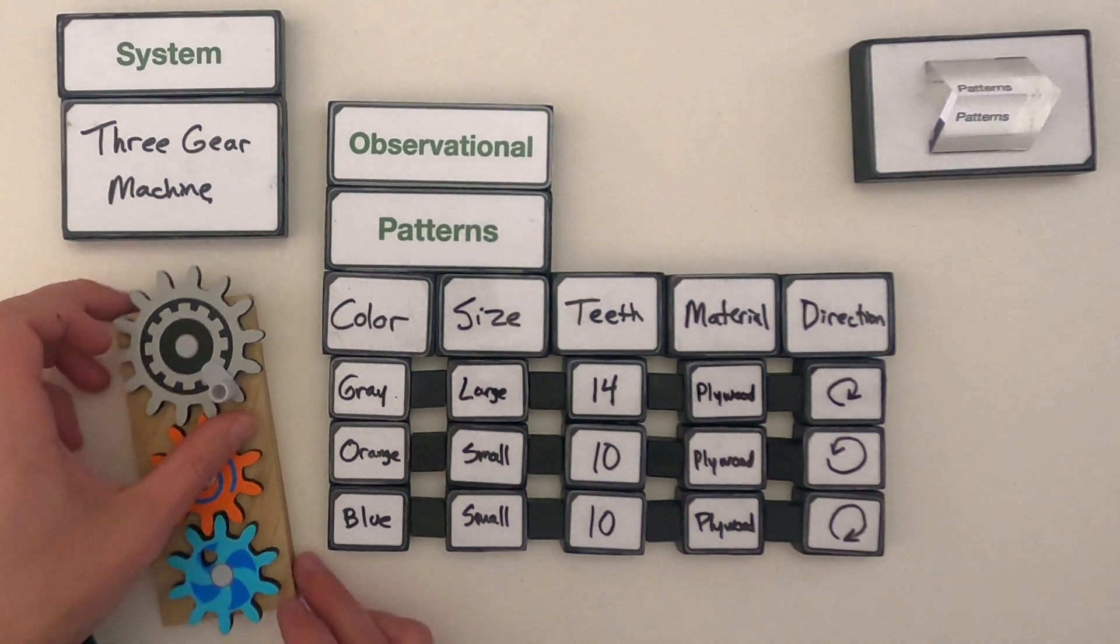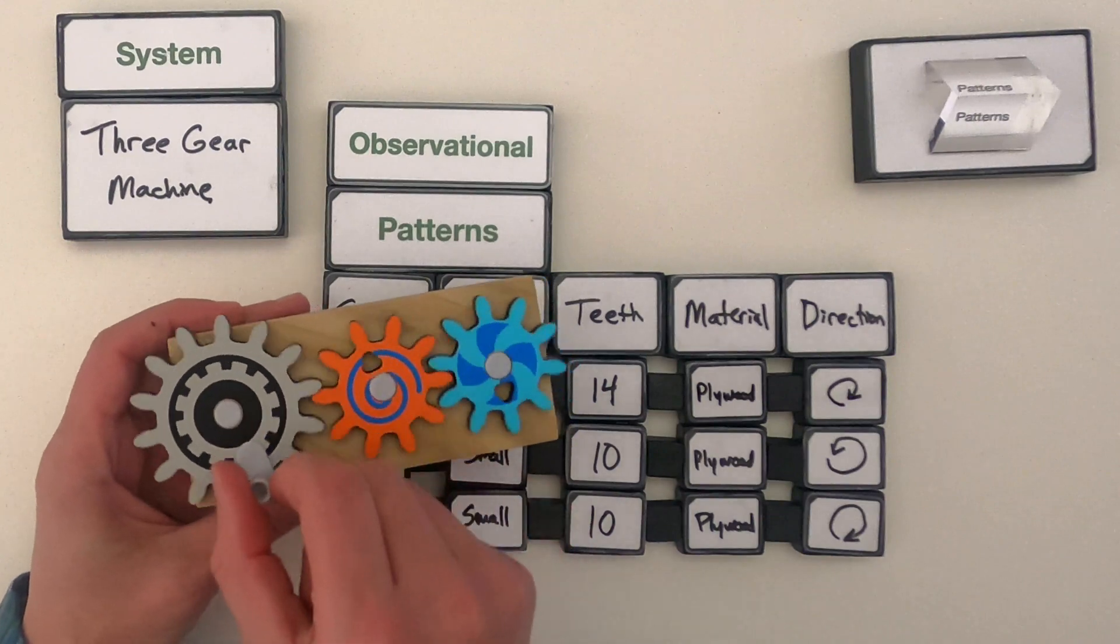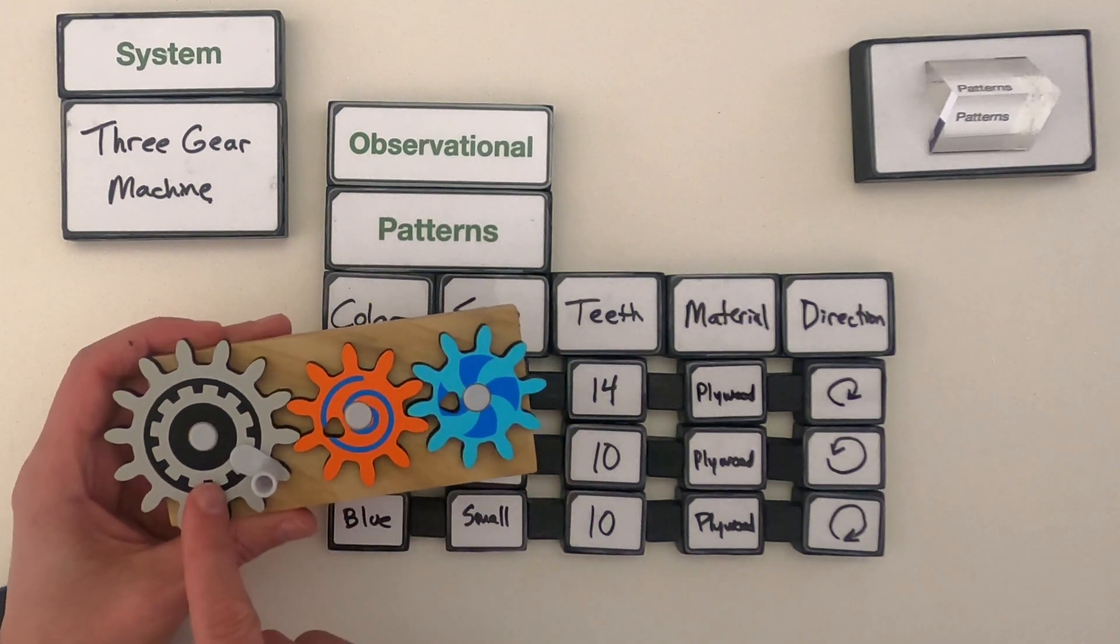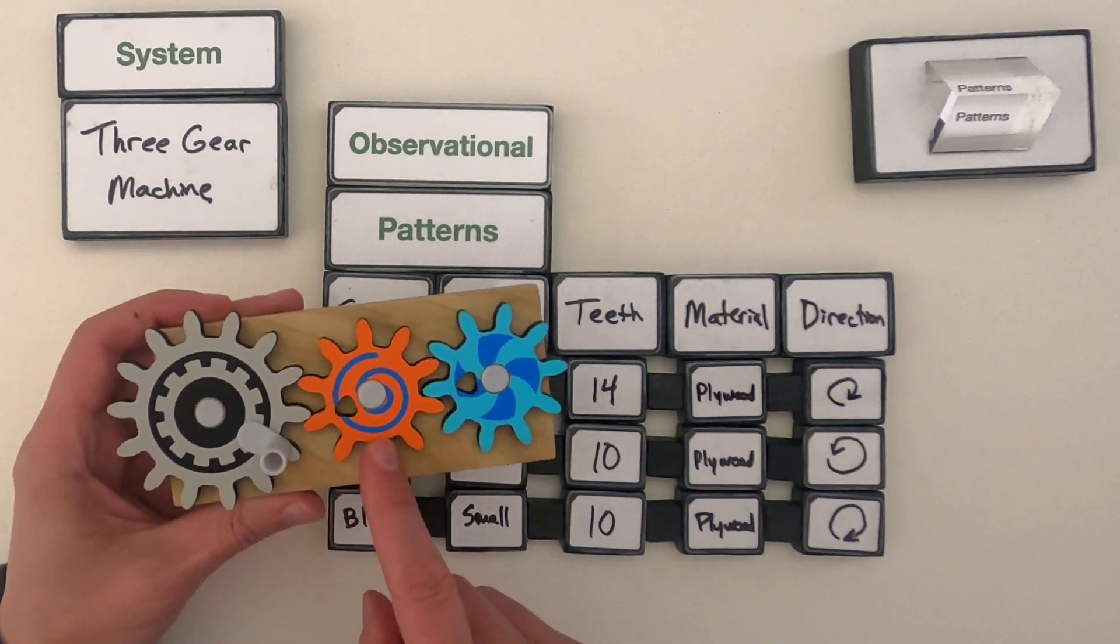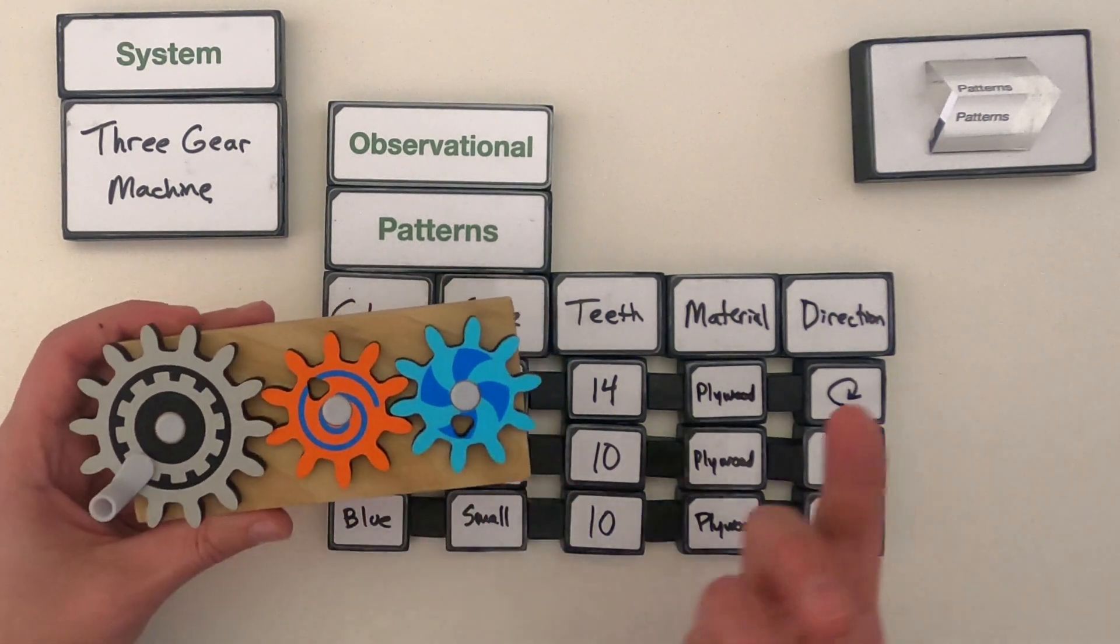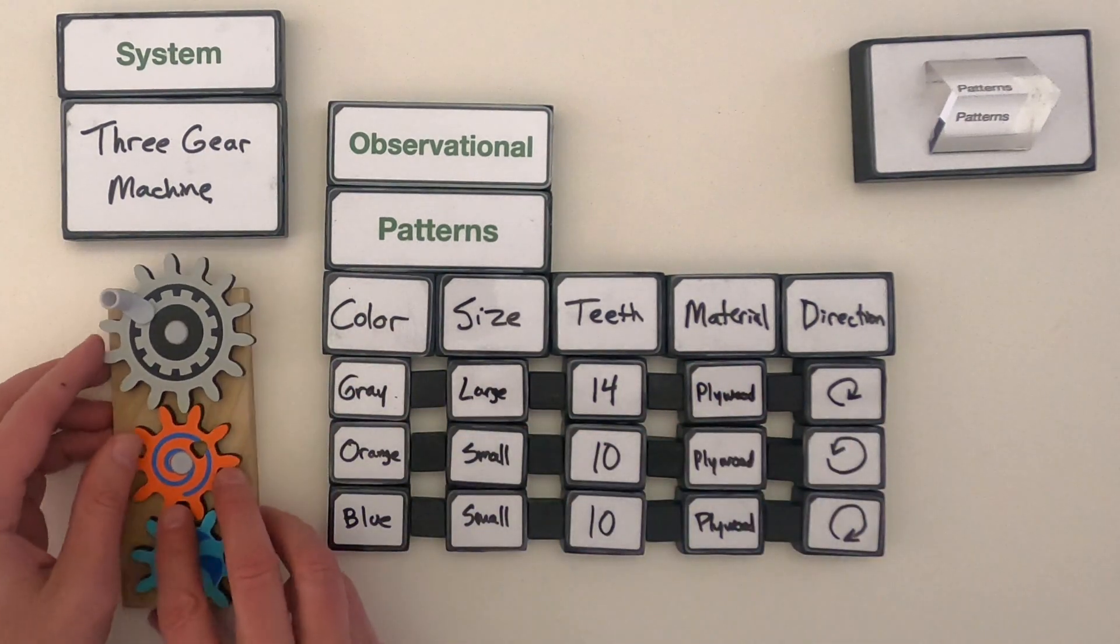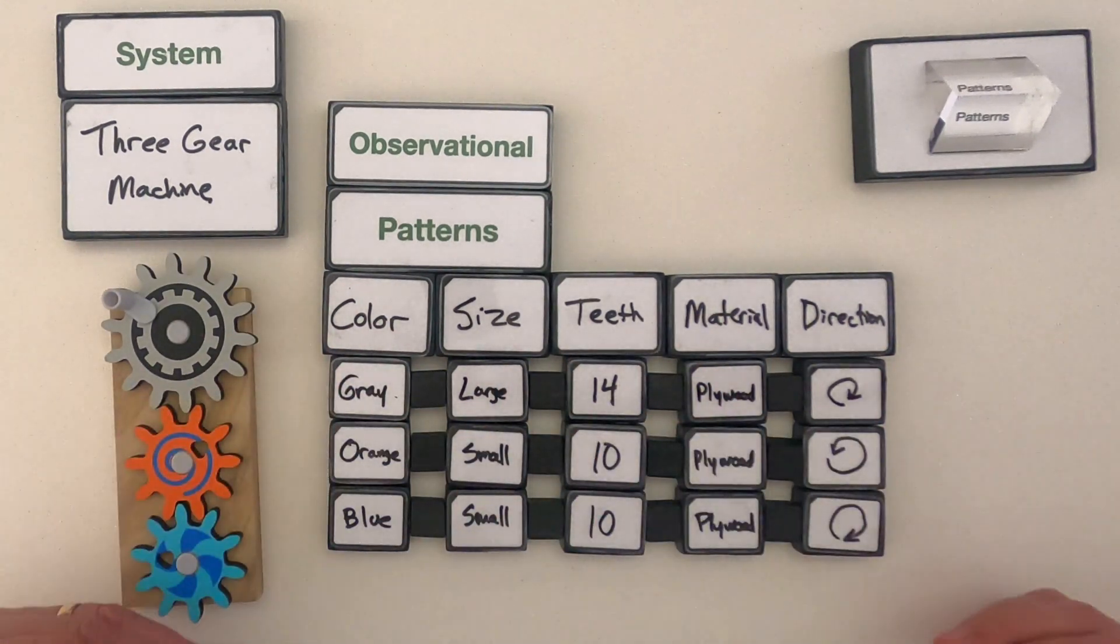This would be another thing that I'm noticing, and that is that as I move the gray gear in this direction, so that we could call that clockwise direction, I'm seeing that the orange gear moves in the opposite direction and the blue gear is moving in the same direction. I could keep studying this and finding more patterns. Each time I identify a different pattern in these different objects, it tells me more about the system.